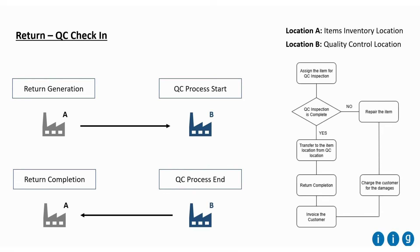As shown in the ER diagram, we assign the item and then it will make the decision whether it is completed or not. If it is completed, it will transfer to the designated location. If not, the repairing process will be done and then transferred to the designated location. Different charges for those damages will be included in the invoice for the customer. Without further ado, let's move into the system transaction process.